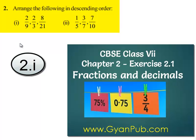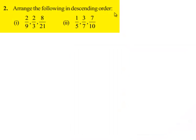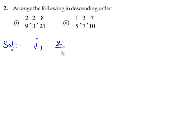Now let us move on to the next question: arrange the following in descending order. In the first bit we have 2 by 9, 2 by 3, and 8 by 21. In the second bit we have 1 by 5, 3 by 7, and 7 by 10. Let us first consider the first bit — we need to arrange 2 by 9, 2 by 3, and 8 by 21 in descending order.